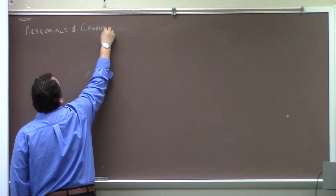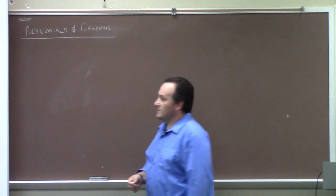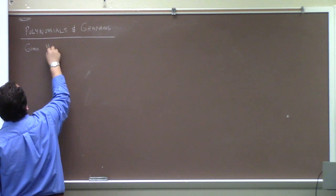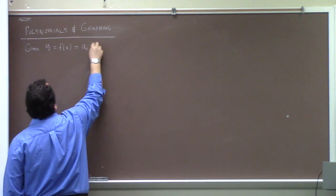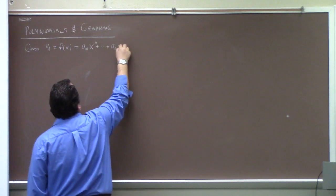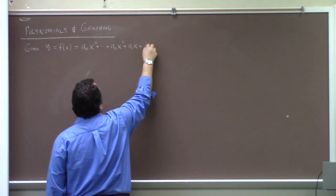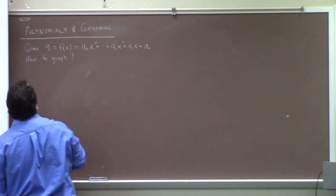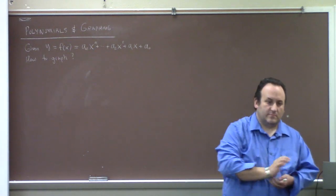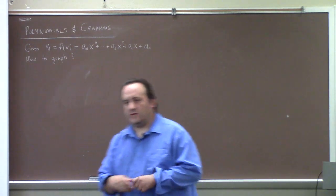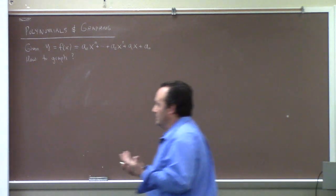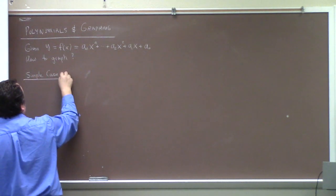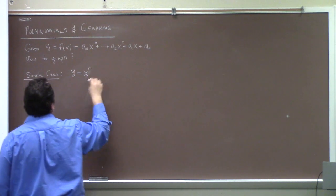I just want to recap some basic things we need to know. Given y = f(x) = aₙxⁿ + ... + a₂x² + a₁x + a₀, how do we graph it? If the polynomial is very simple, we already know what to do. Something like y = xⁿ — we can just shift around. For example, y = x² - 2, you could graph that without anything terribly sophisticated.